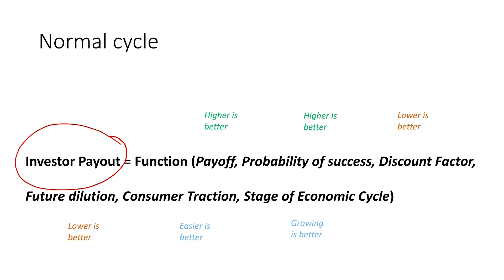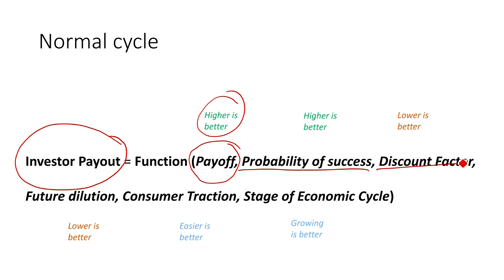That payout is a function of several factors. One is their payoff — how much is this business going to be worth five to ten years down the road? One is probability of success — what's the likelihood the business will succeed and reach that payout? One is the discount factor, essentially the interest rate. One is future dilution — how much more capital do we need to raise? One is consumer traction — how easy is it for the market to grow, for us to monetize and convert customers into paying customers.